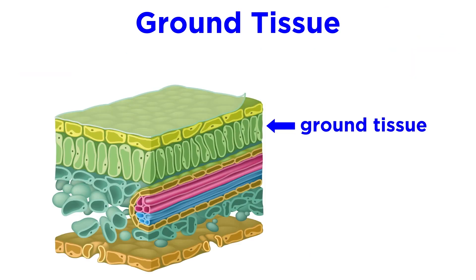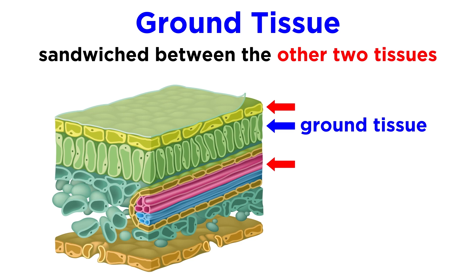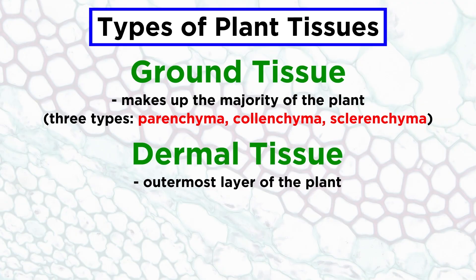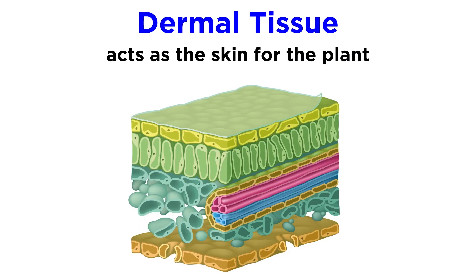But as we said, ground tissues are just one of the three kinds of plant tissue, and these ground tissues are essentially sandwiched between the other two kinds of tissue in a plant. On the external surface of a plant, we can find dermal tissues. This name makes sense, because dermal is a word that relates to the skin or exterior of a living organism, so these tissues essentially form a sort of skin for the plant.